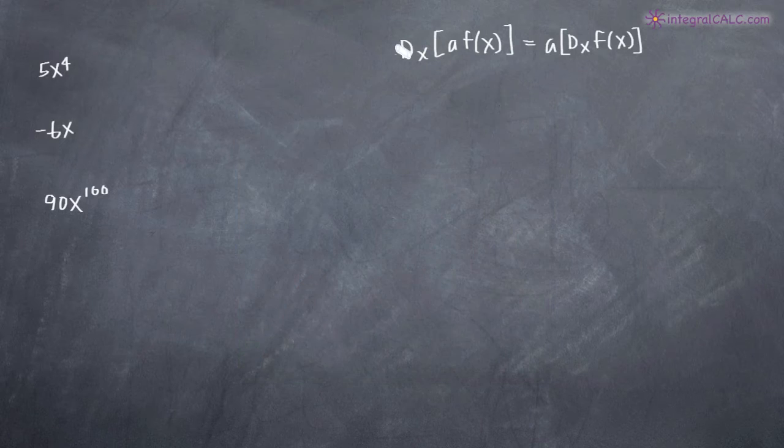Basically, the formula that we're going to be using here is the following and all it says is that when you're taking the derivative of some function f(x) and it's multiplied by a constant real number a, like this,